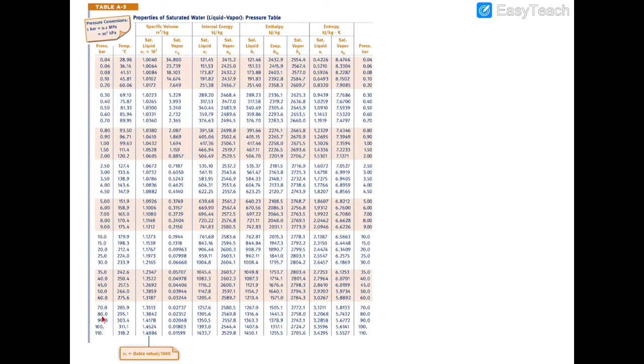We go down to 80 bar and see that the saturation temperature is 295.1 degrees Celsius. We're definitely way above that at 600, so we're in the superheated region. We turn to table A4, go to 80 bar and 600 degrees Celsius, and find the specific volume.